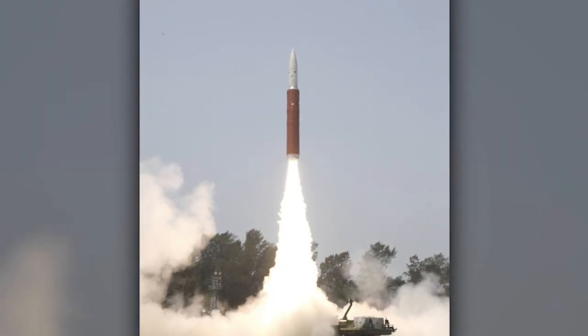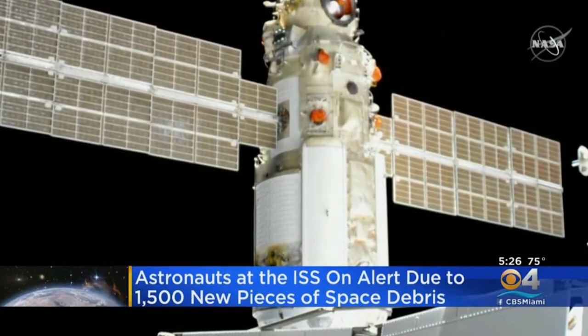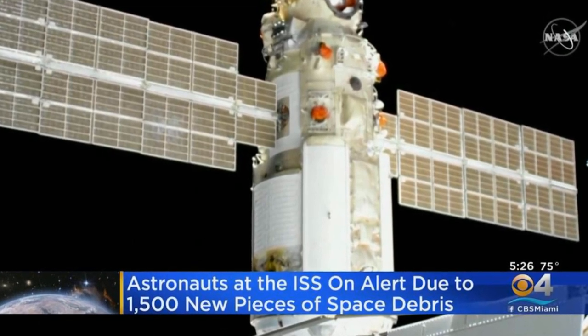So last week, Russia performed an anti-satellite test by blowing up a satellite which produced 1500 pieces of trackable debris. And the debris was in the path of the ISS, so the astronauts had to hide in their return vehicles while the debris passed.